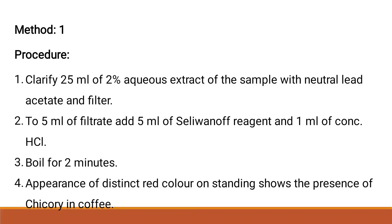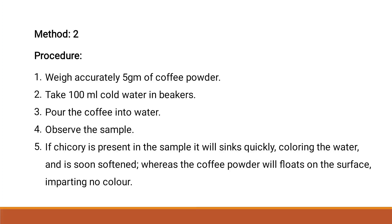Method 2: Weigh accurately 5 grams of coffee powder and add 100 ml of water in a beaker. Pour the coffee into the water and observe. If chicory is present, it will sink quickly, coloring the water, and will soon soften. The coffee powder, however, will float on the surface imparting no color to the water.